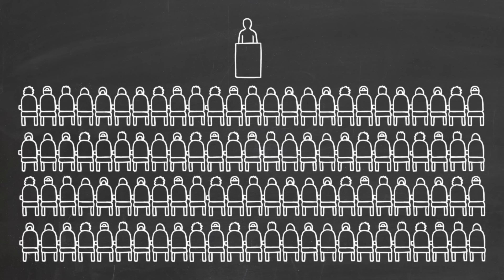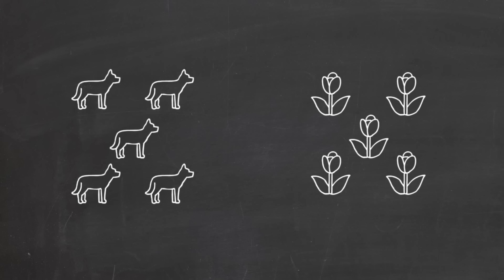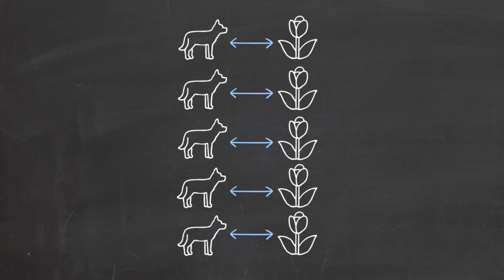As another example of matching being more fundamental than counting, if I'm speaking to a packed auditorium, where every seat is taken and no one is standing, I know that there are the same number of chairs as people in the audience, even though I don't know how many there are of either. So what we really mean when we say that two sets are the same size is that the elements in those sets can be matched up one by one in some way.